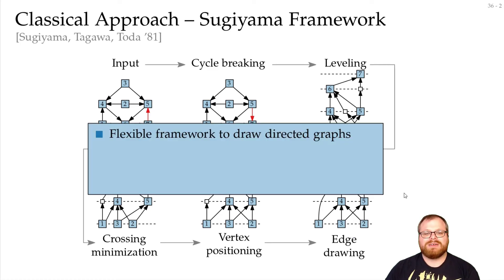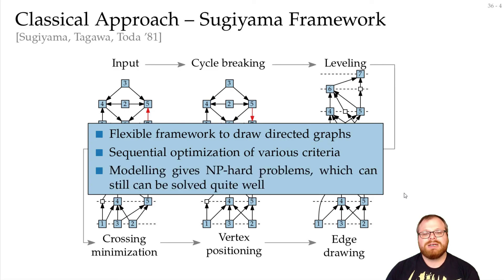So we've learned about a very flexible framework to draw directed graphs, where we sequentially optimize various criteria. And we get many very interesting NP-hard problems from the modeling. And although they are NP-hard, we can still solve them quite well. Thank you for watching.